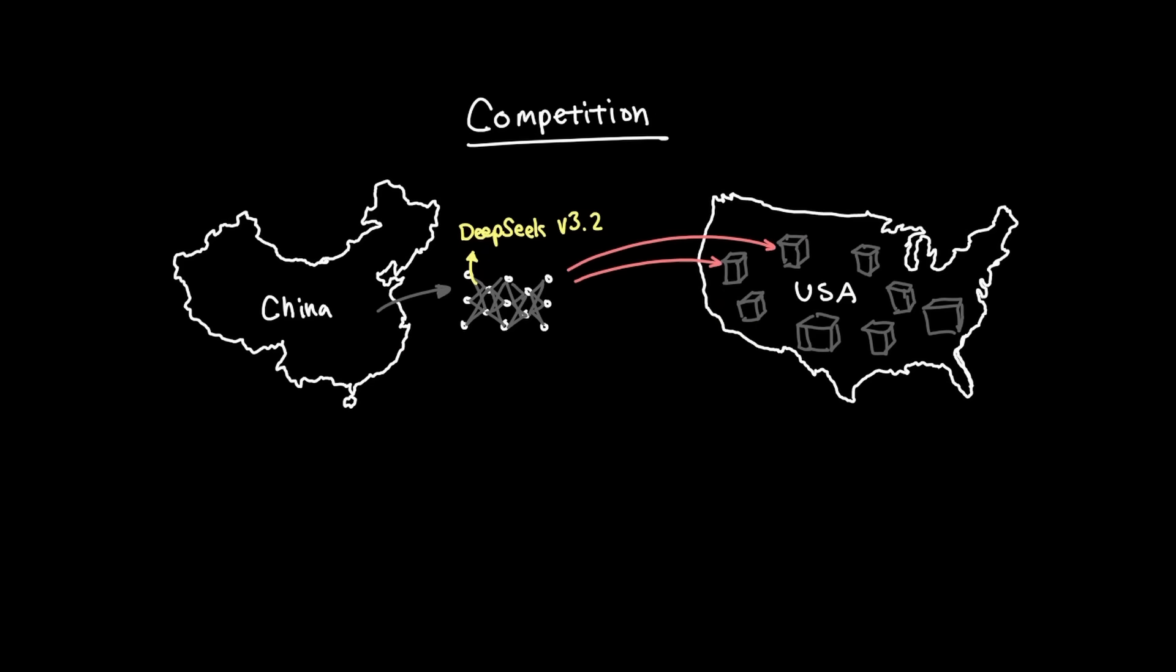And second, the more US companies start to use and rely on Chinese models, the more we start to gain trust in China. Right now, most people in the US simply don't trust China when it comes to privacy. But every successful release that China makes is a small incremental step towards winning the trust in Chinese technology. And they're inching towards gaining full trust from the US.